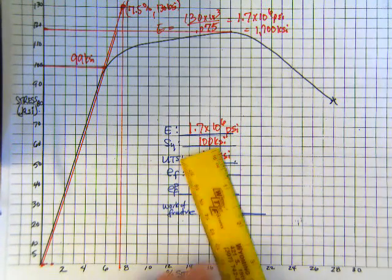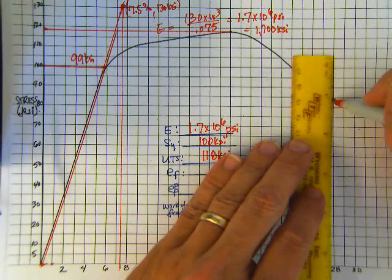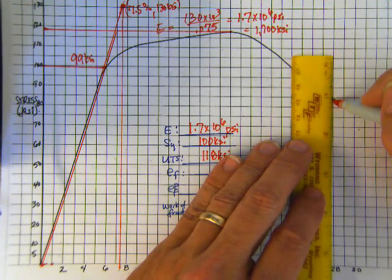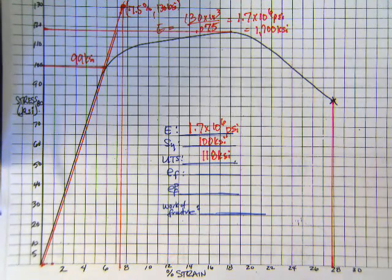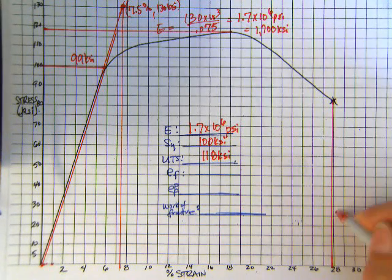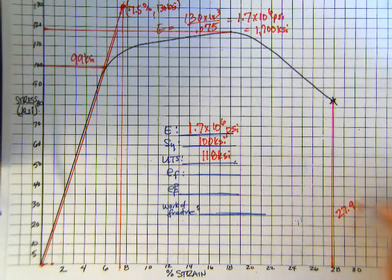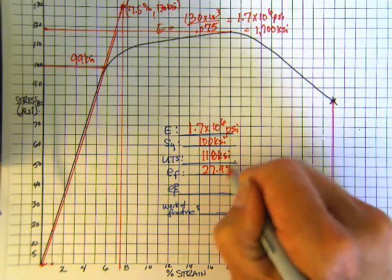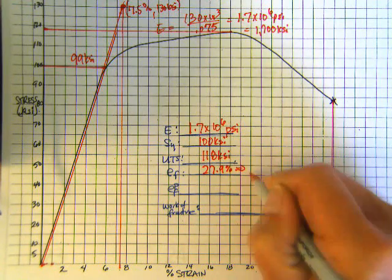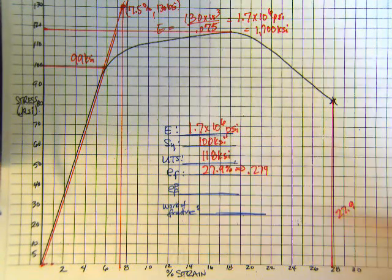And then total strain at failure. We're just reading how much did it stretch, total, when it broke. And that puts us here. So we're talking 27.9. That's a pretty large scale there. So 27.9%, or you could write that as 0.279 strain if you wish.